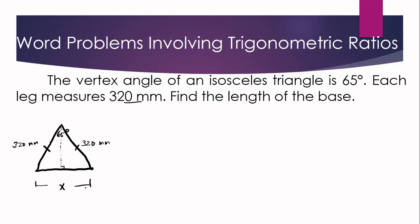We cannot get the base length all at once. Considering the right triangle on the right side, let us denote the half-base as y. Since the altitude of an isosceles triangle is also a median, both halves are congruent, so the equation to get x will be x = 2y. We need to find y first. For a reference angle, we use the base angle, which measures 57.5 degrees — calculated by subtracting the vertex angle 65 from 180, then dividing by 2, since the base angles are congruent.